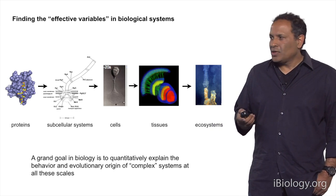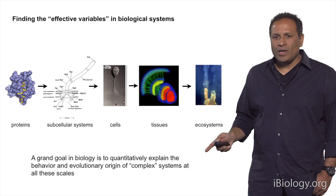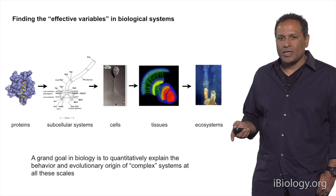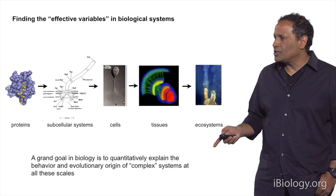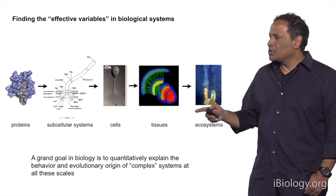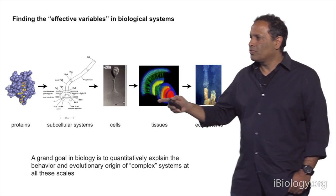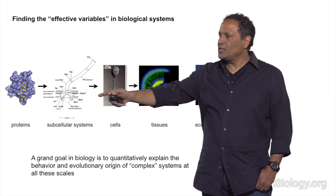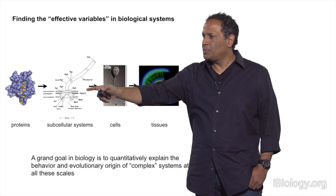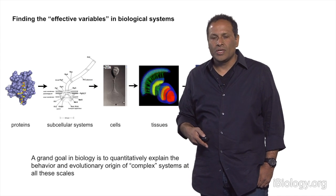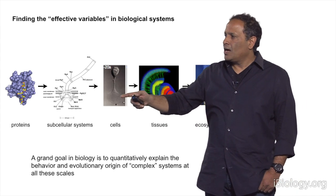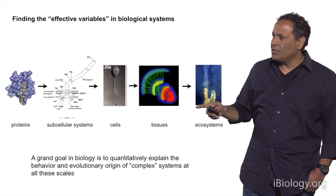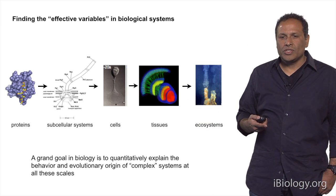A grand goal in biology is to quantitatively explain the behavior and evolutionary origin of complex systems at many scales. Here I'm showing biological systems at a variety of scales — from the atomic scale, that is the structure and function of proteins, to things at the cellular scale, the design of subcellular macromolecular systems like the flagellum, or the design of cells and tissues, and ultimately even the design principles of ecosystems.